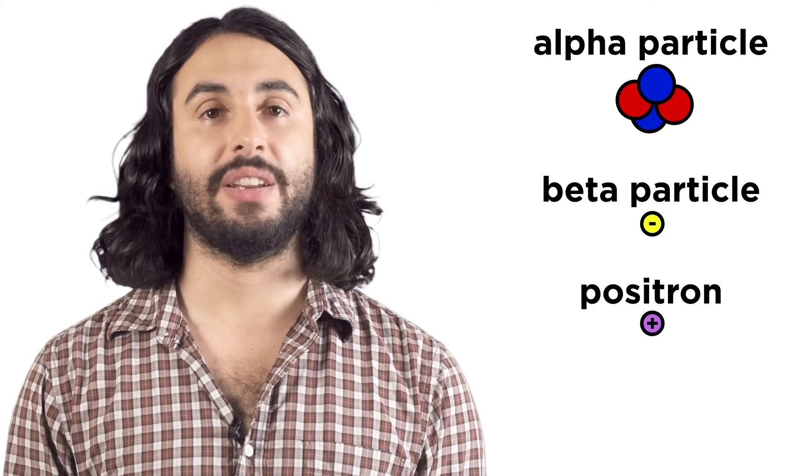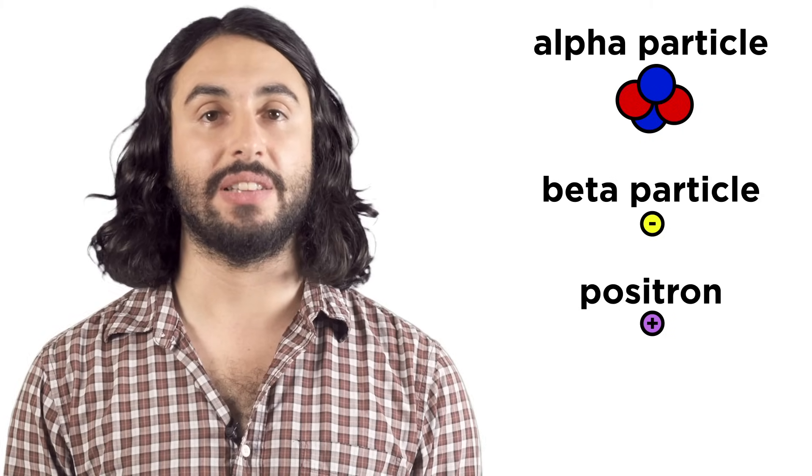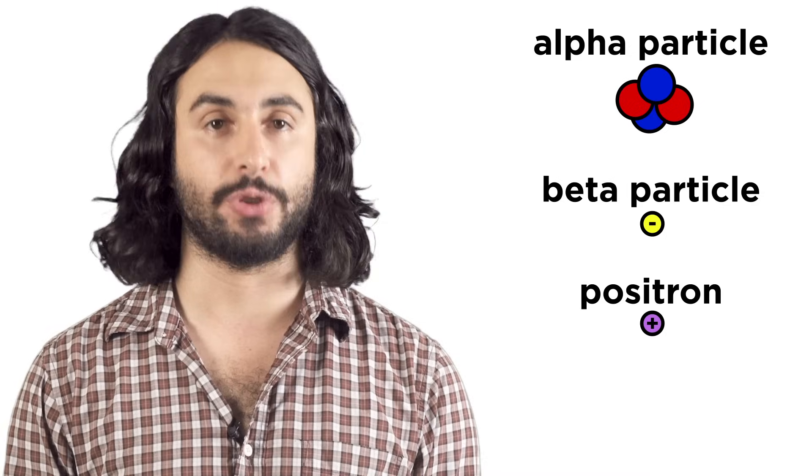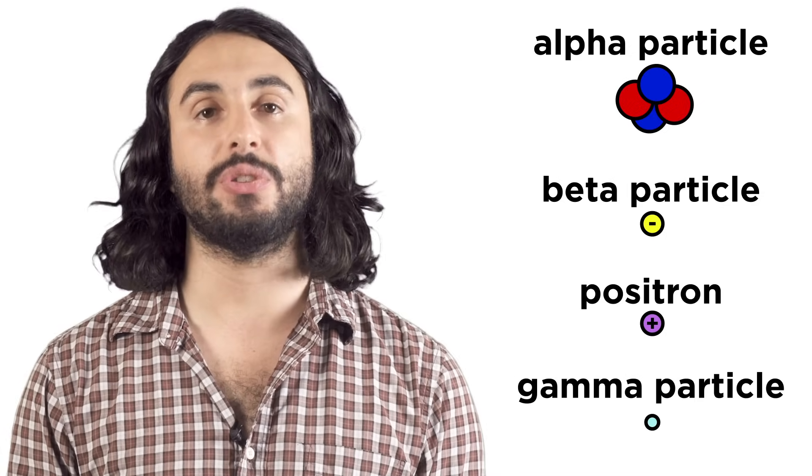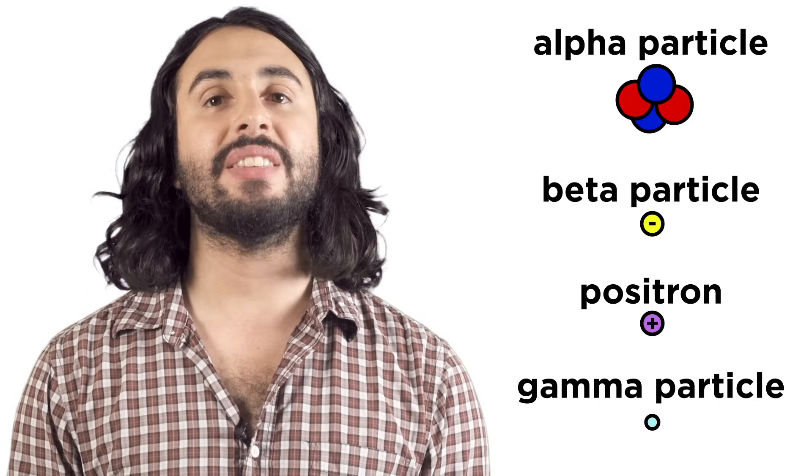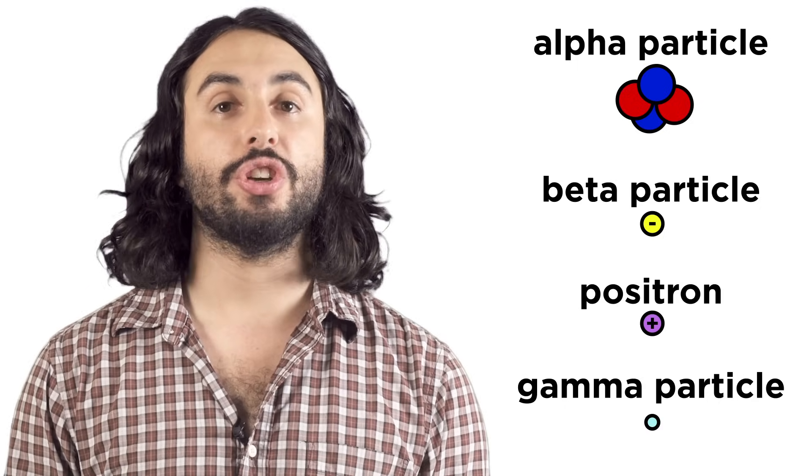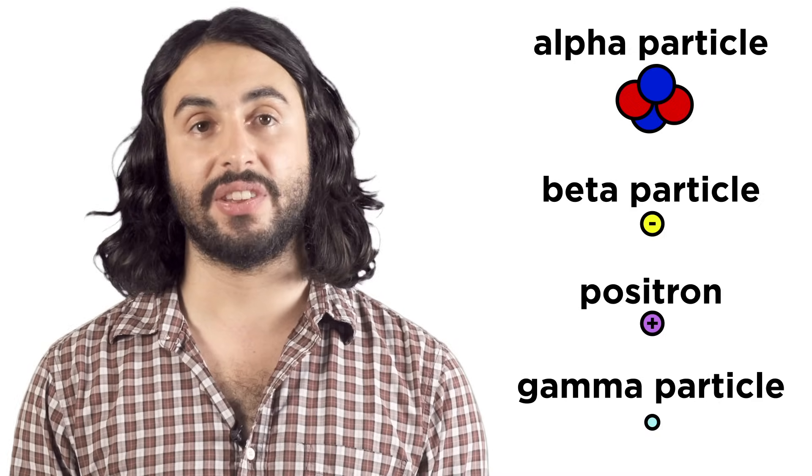A beta particle is an electron. A positron is the antimatter particle of the electron, which has the same mass as the electron but a positive charge. And a gamma particle is a photon of light. This is the same as the electromagnetic radiation from the Bohr model, just no longer associated with the transition of an electron.